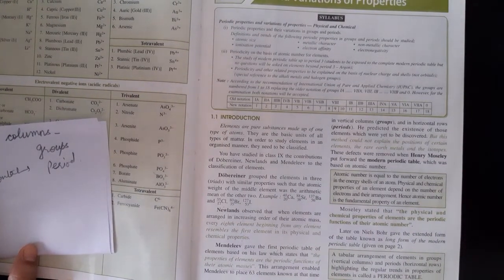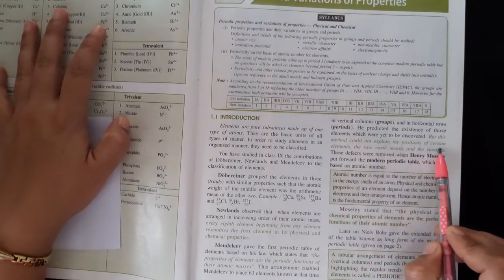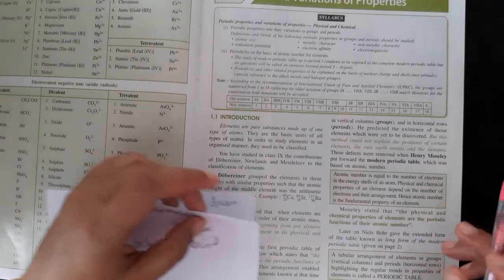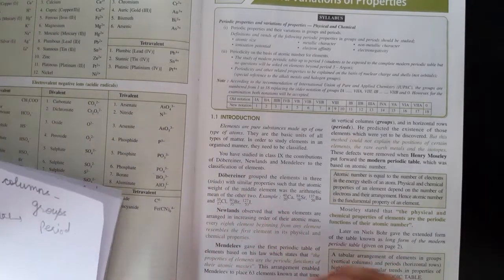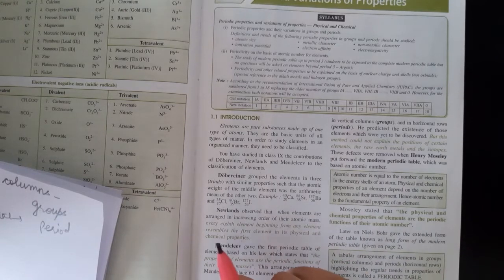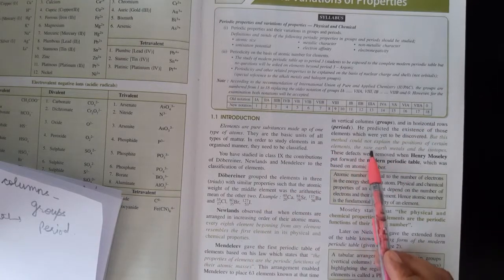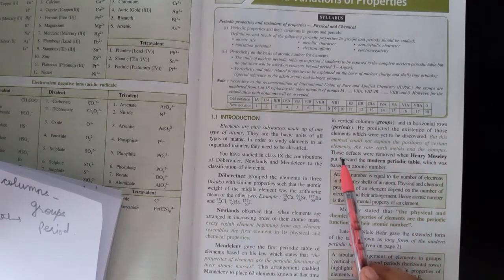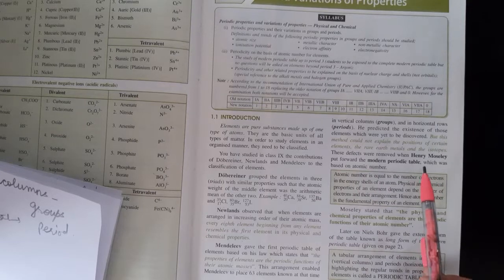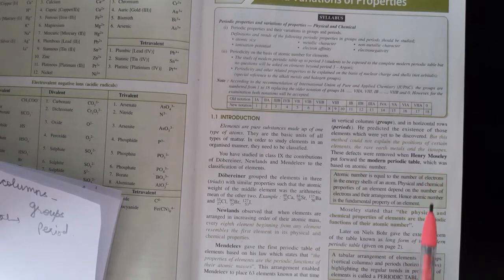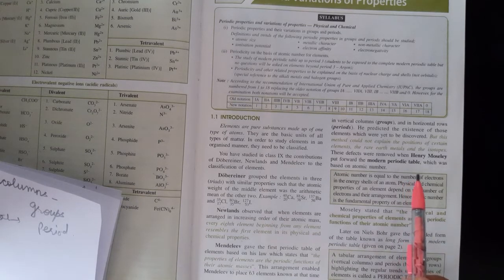He predicted the existence of those elements which were yet to be discovered. He made predictions that there may be more elements. But this method could not explain the position of certain elements. He did good work, discovered much, but the problem came because some elements' positions were wrong. Rare earth metals and isotopes - these defects were removed by discovery. These problems were overcome by Henry, and what periodic table did he give us? Modern periodic table, which we are studying now, which you have learned.